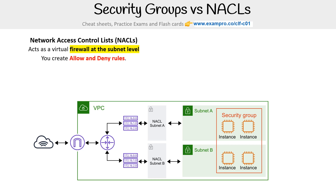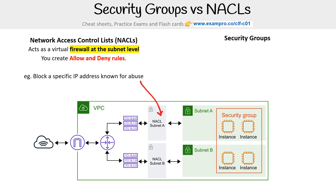With NACLs, you can create both allow and deny rules. This is really useful if you want to block a specific IP address known for abuse. I'm going to compare that against security groups, because that's going to be a very important difference.